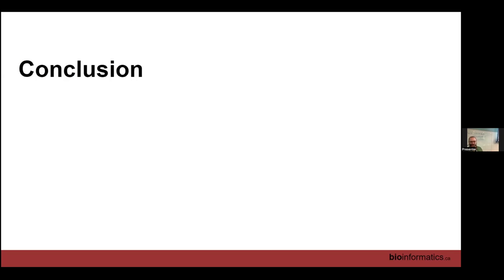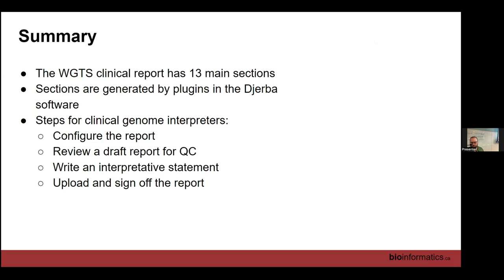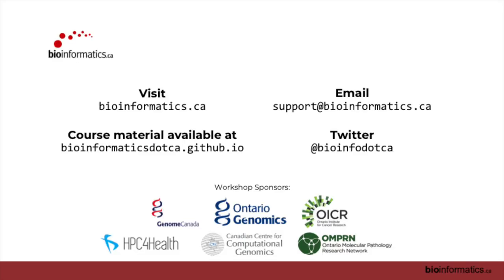This concludes part two of my talk. To sum up: we have 13 sections in the WGTS report covering all the findings from whole genome and transcriptome sequencing, and we're looking to add more. The sections are generated by plugins in the Jirba software — about 20 plugins go into a report. It then goes into human review and human judgment by the clinical genome interpreters. We configure the report, review a draft for QC purposes, write our interpretive statement, and then upload and sign off. Are there any questions?